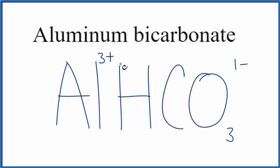The way we can do this is we could put parentheses around our bicarbonate ion, and then put a 3 outside. 3 times 1 minus, that's 3 minus, so 3 minus, 3 plus, adds up to zero. We have a net charge of zero.